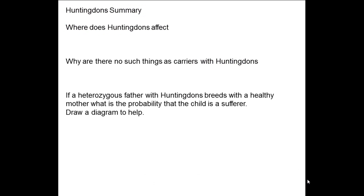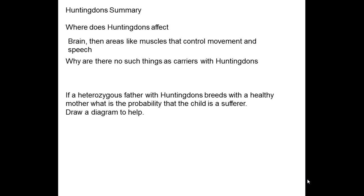So in summary: Huntington's — what does it affect? It affects the brain, so it affects things like memory and it can affect things like movement as well. Why are there no such things as carriers with Huntington's? Because it is caused by a dominant allele, it means that you either have it or you do not. You don't carry the allele for it — you will either have the disease or you won't.